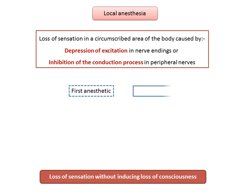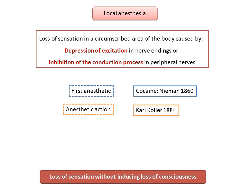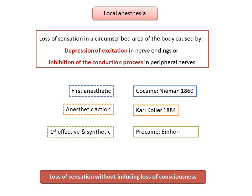Taking a brief look at the historical background: cocaine was the first local anesthetic agent, isolated by Niemann in 1860 from the leaves of the coca tree. Its anesthetic action was demonstrated by Carl Kohler in 1884. The first effective and widely used synthetic local anesthetic, procaine, was produced by Einhorn in 1905. Lidocaine, which is the most widely used local anesthetic agent in today's era, was introduced by Lofgren in 1948.